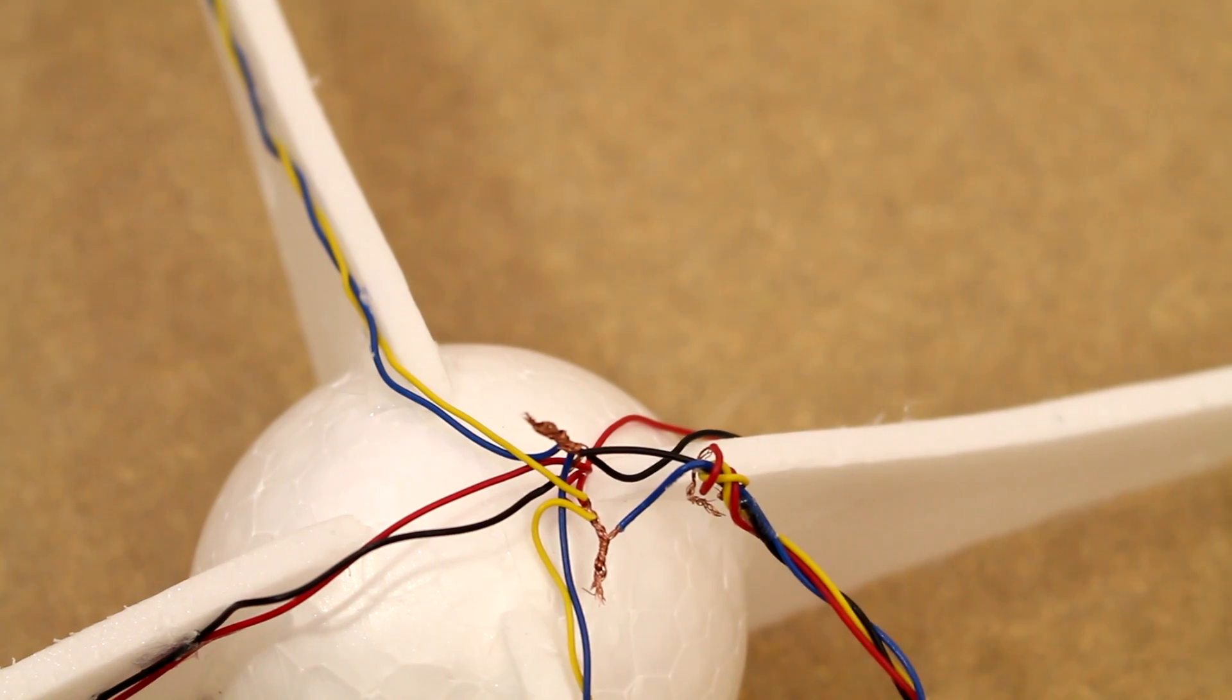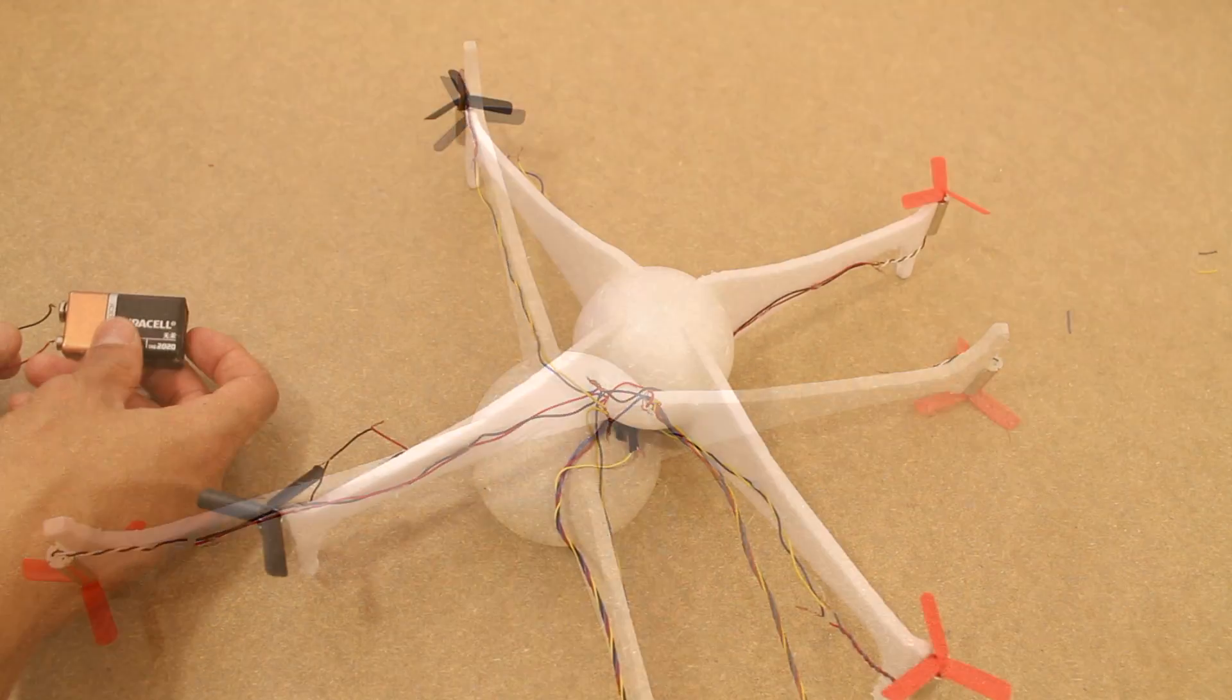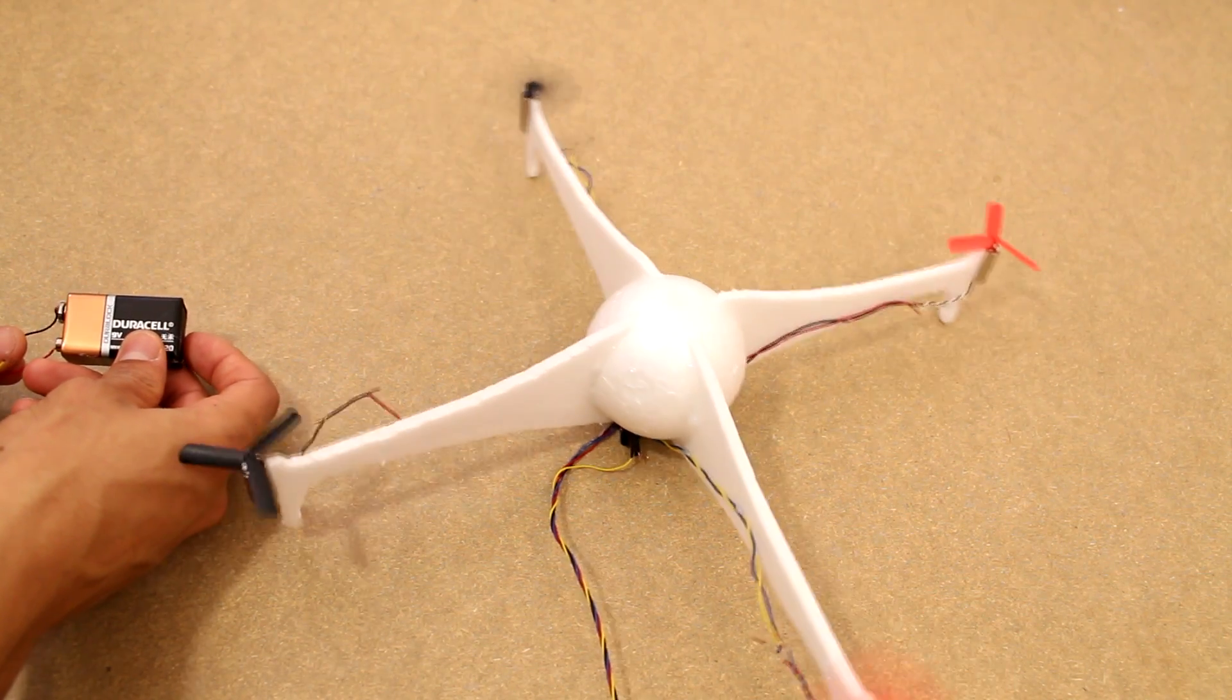As before, the motors are just connected to each other. The sets of two are connected to each other in parallel, and the other set of two are connected to another set of wires.